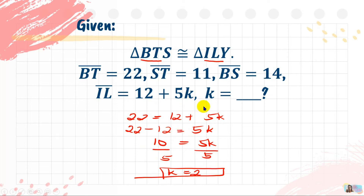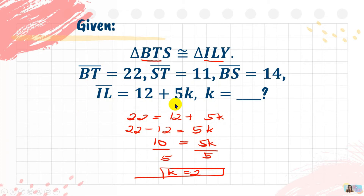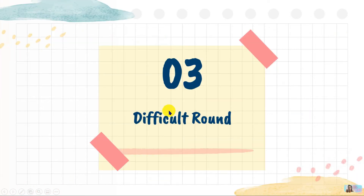Remember: use the congruence statement first to determine which parts of the two congruent triangles are corresponding and congruent. In this case, side IL is congruent to side BT, so 22 equals 12 plus 5K. Now let's move to the Difficult Round.